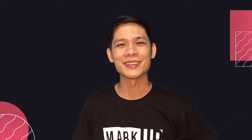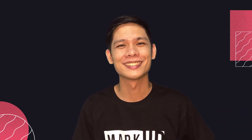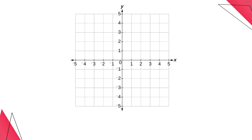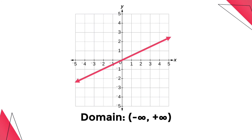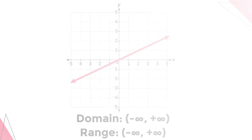And here are some examples. For the first example, the graph extends infinity to the right and to the left, as well as upwards and downwards. Thus, the domain and range are the set of all real numbers, represented in interval notation by open parenthesis negative infinity, comma, positive infinity, close parenthesis.